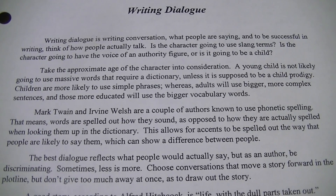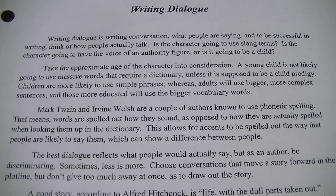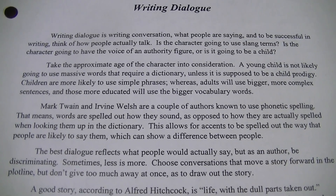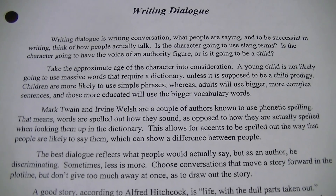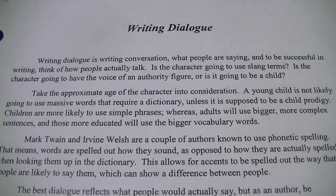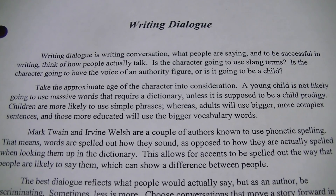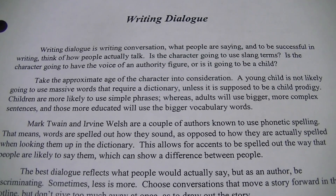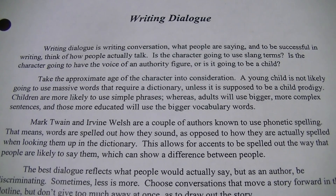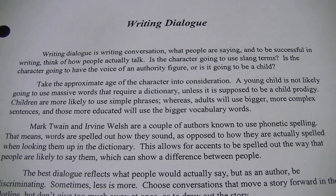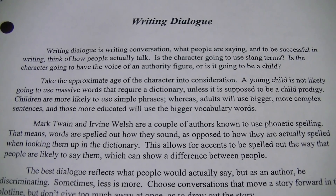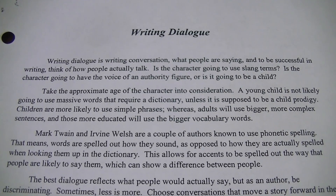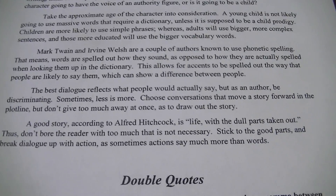Writing dialogue is basically just conversation. What are people thinking and saying? How are they saying it? Are they saying it with an inflection? Do they use slang terms? Do they have an authority figure voice? Is it a child? You want to take that age of the character into consideration, because a child is not going to use big words like a scholar would — unless the child is a prodigy. They're more likely to use simple phrases like 'I want this' or 'let's play,' whereas an adult might use bigger, more complex sentences, as well as scholars and educated types like doctors.